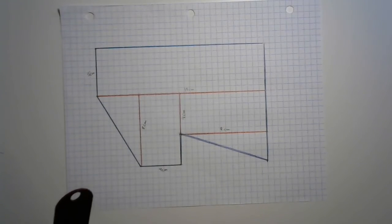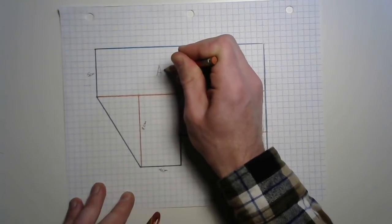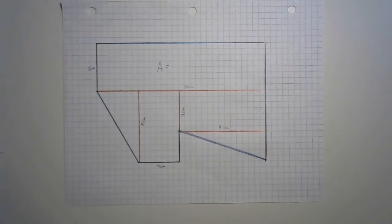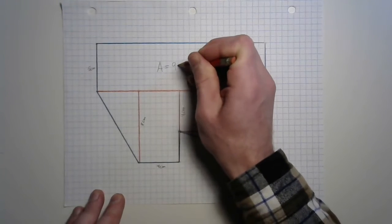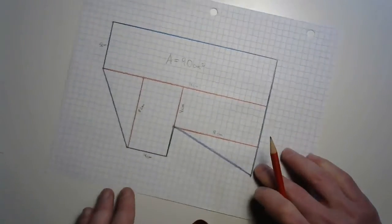So we've got the rectangles all taken care of. And why don't we find those real quick? Do you think you can help me with that? 5 times 18. Yeah, 90 centimeters squared. And don't forget, those are squared.